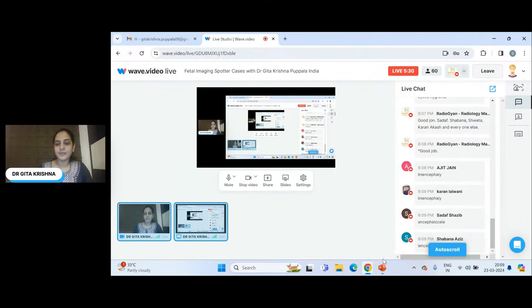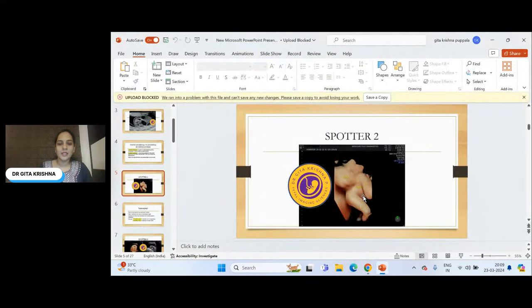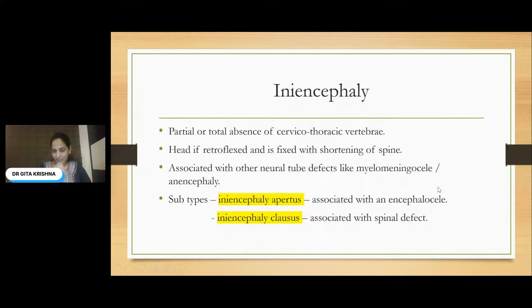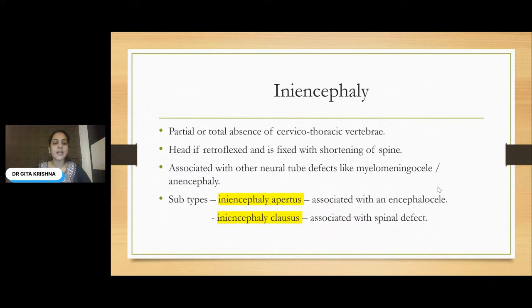It is iniencephaly. Iniencephaly is a condition where there is partial or total absence of cervical and thoracic vertebrae, and the head is completely retroflexed and fixed with a significantly short spine. It is usually associated with other neural tube defects like myelomeningocele or encephalocele. There are certain subtypes: iniencephaly apertus, which contains encephalocele, and iniencephaly clausus, which contains a spinal defect.